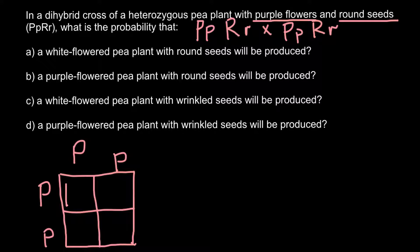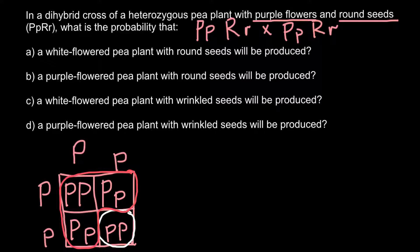The genotype capital P capital P would produce purple color, and in simple Mendelian genetics the heterozygous genotype also produces purple color because this is simple dominance. The genotype lowercase p lowercase p would produce white flowers. So three-quarters probability of purple flowers and one-quarter probability of white flowers when we cross two heterozygous parents for this gene.